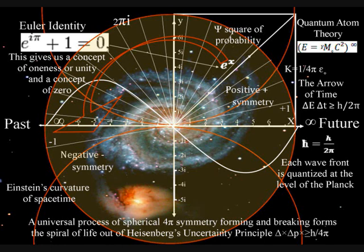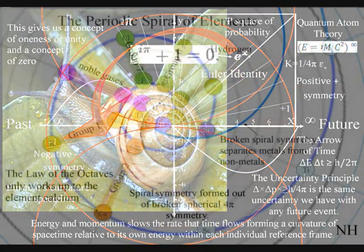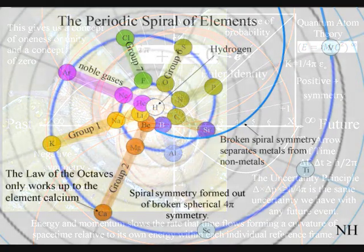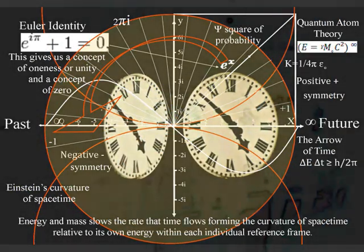This process is totally universal and interactive. From the largest object to the smallest creature, right down to the smallest element of the periodic table, will slow the rate that time flows, forming a curvature of space-time relative to its own energy or mass.